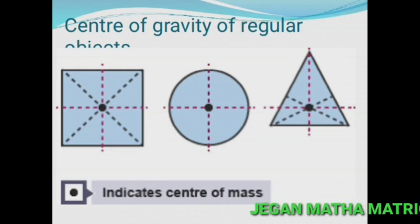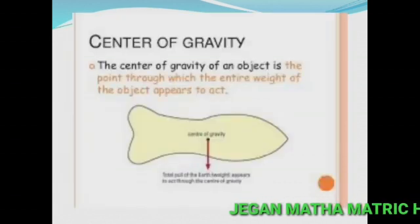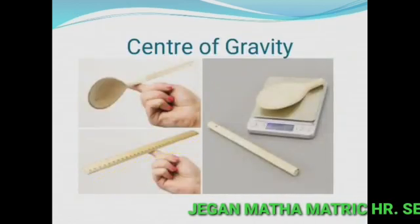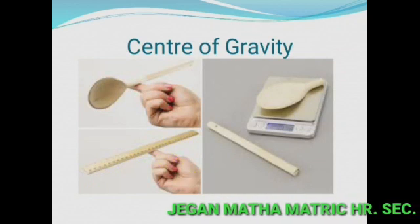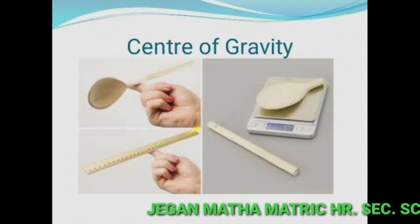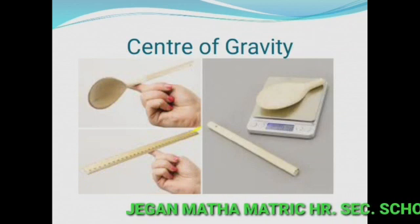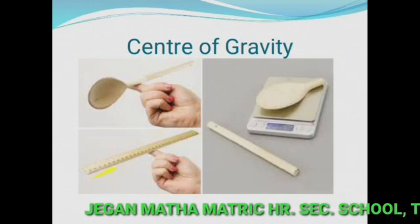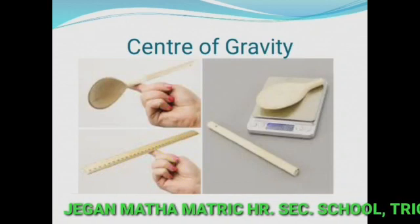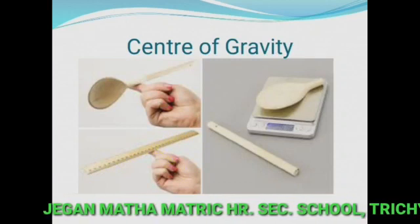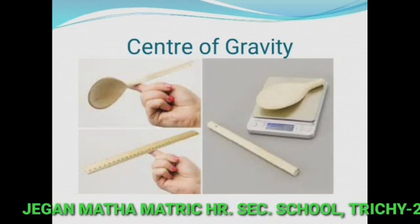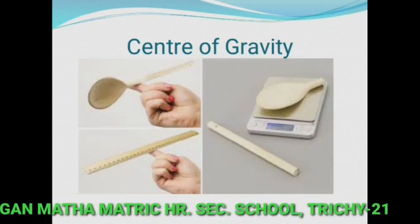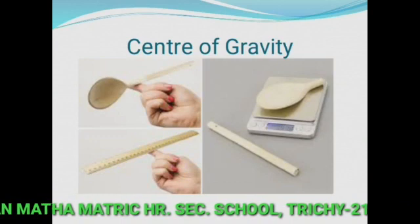For example, a ruler scale is in equilibrium when supported at its center of gravity. For a regular shaped object such as a uniform meter ruler, the center of gravity is at the center of the object. When supported at that point it will be balanced; if supported at any other point it will topple. The center of gravity is the point through which the entire weight of the object appears to act.